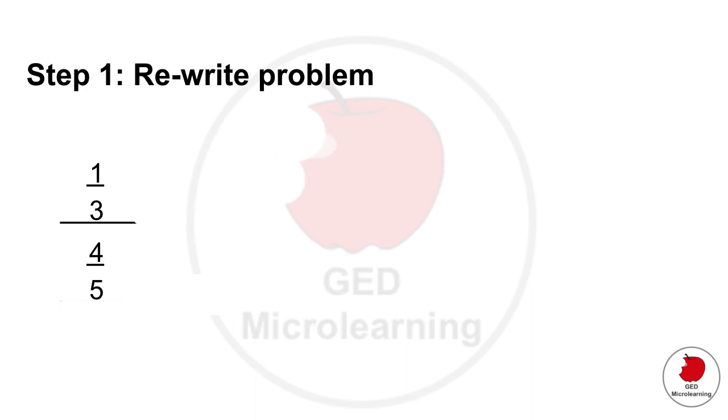So the first thing that you want to do is you want to take that problem on the left and you want to rewrite the problem like this. So you would have one-third divided by four-fifths and now you're going to apply the keep change flip formula.